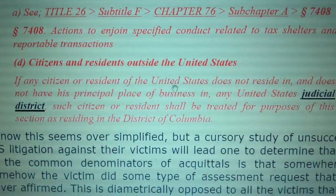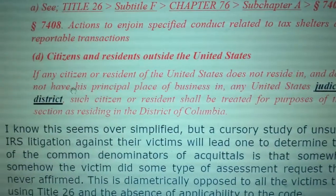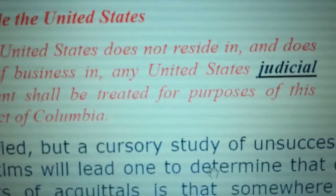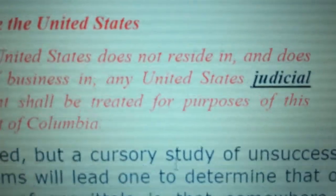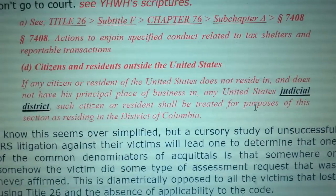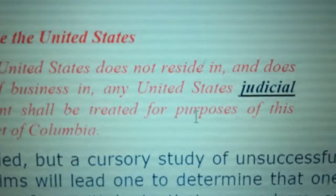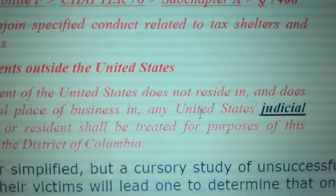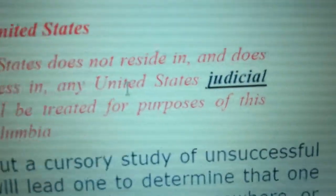If any citizen or resident of the United States does not reside in or does not have his principal place of business in any United States, which is Guam, Mariana Islands, whatever it wants to define in Title 26 for its specific section. The Petroleum Clause specifically includes the 50 states of the Union, but the 50 states of the Union isn't included in the United States in other places like 7701 or other definitions of the United States — only the Petroleum Clause.